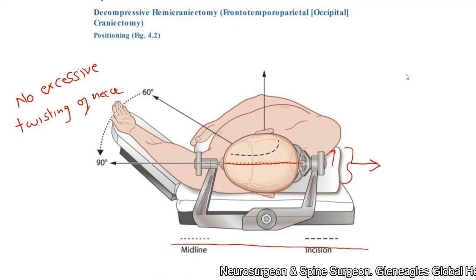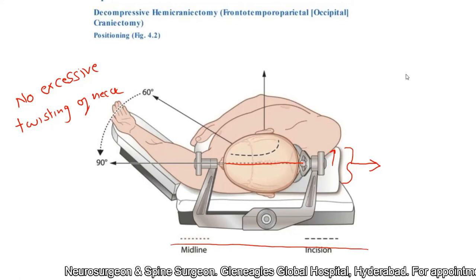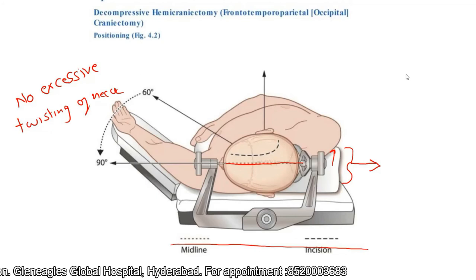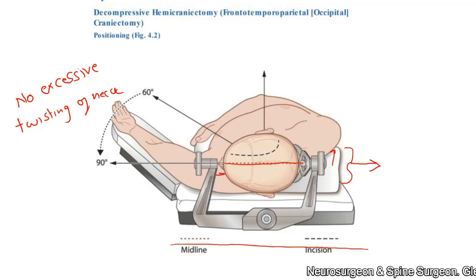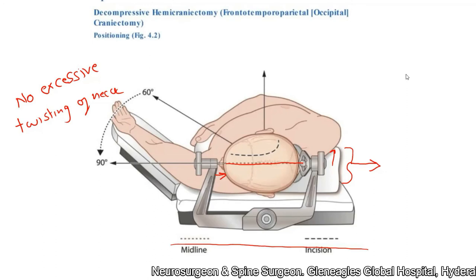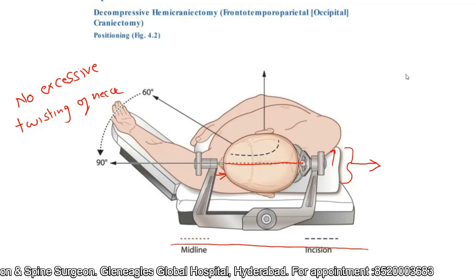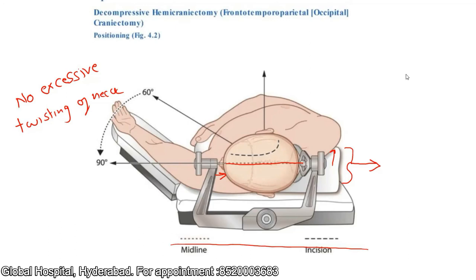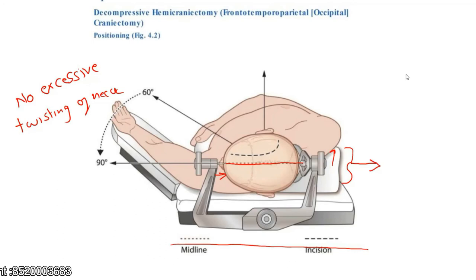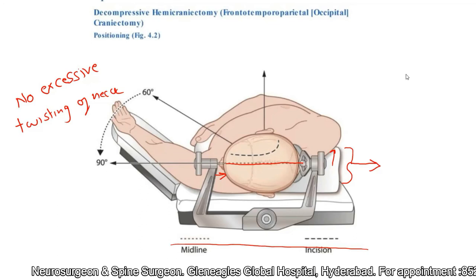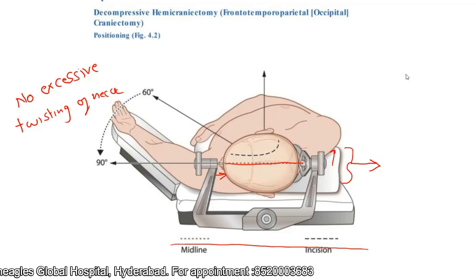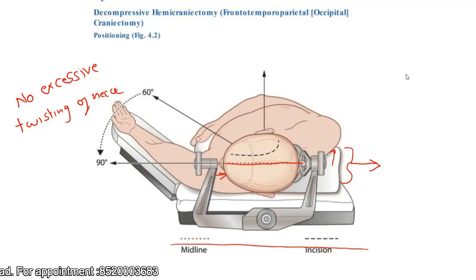Regarding placement of the three pins of the three-pin headrest: I usually place the single pin on the frontal side and two pins on the occipital side. I place the single pin on the contralateral mid-pupillary line, at least one inch above the supraorbital ridge. This is for two reasons: if placed in the midline, you may enter the superior sagittal sinus, which is catastrophic; and if placed just above the supraorbital ridge, you risk entering the frontal sinus.